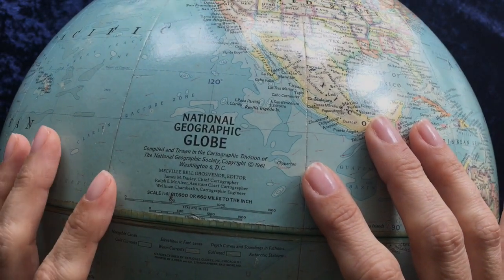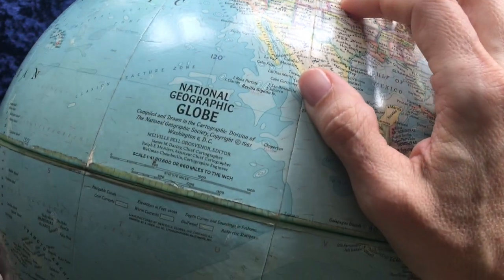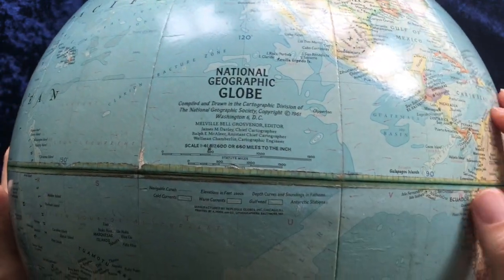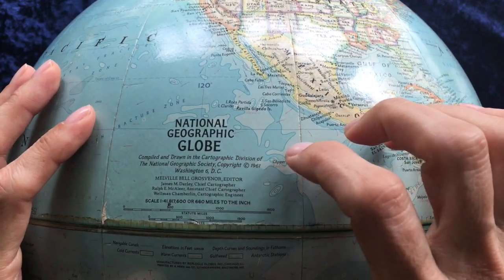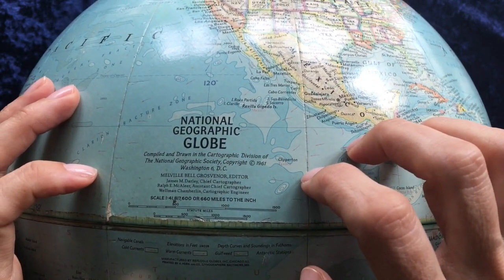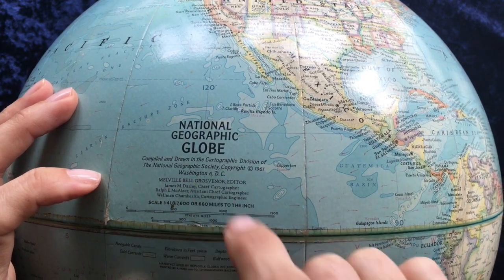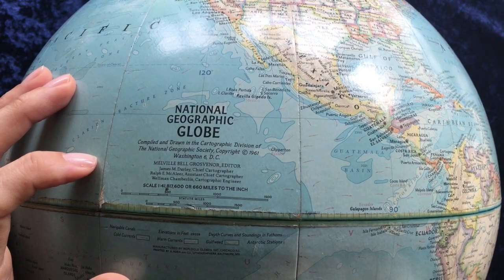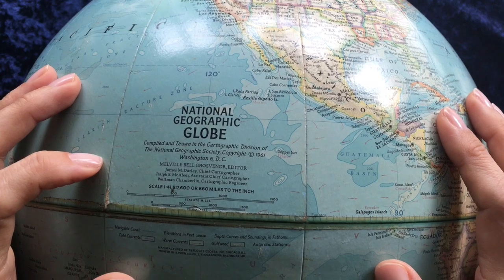Hello my friend and welcome to the study. Today we're going to look at a globe from 1961. This is a National Geographic globe from the United States, compiled and drawn in the Cartographic Division of the National Geographic Society, Washington, D.C.